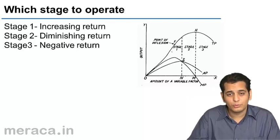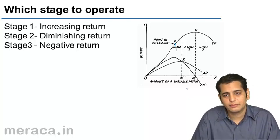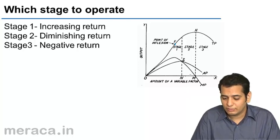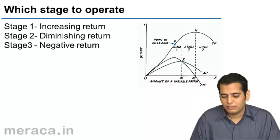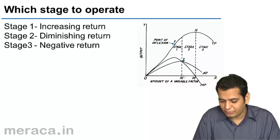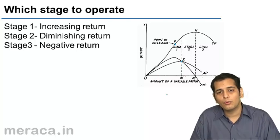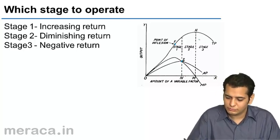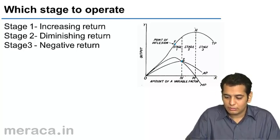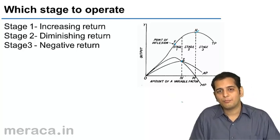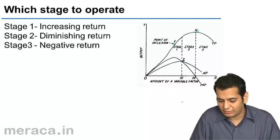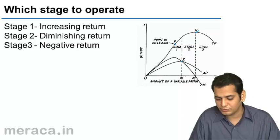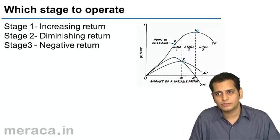Some say he would like to be at point F. Others argue he should be at point S, wherein he produces ON number of units. Some might say he should be at point H where the total product is maximum and he should be producing OM number of units.